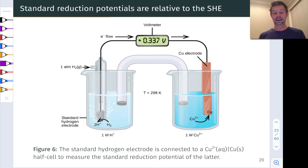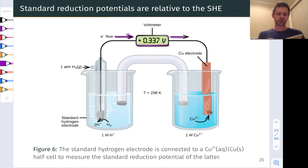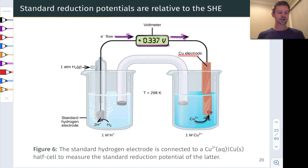Here's an example of this in action. When we hook up the SHE to the copper/copper(II) electrode and measure the voltage of the resulting galvanic cell, we get a result of 0.337 volts. Notice that spontaneously, when we hook up this cell, electrons flow from the SHE into the copper electrode. And so the copper electrode here is the cathode — this is where reduction is occurring. You can see that here with Cu²⁺ ions depositing on the copper metal as additional copper metal.